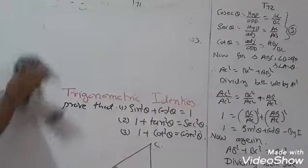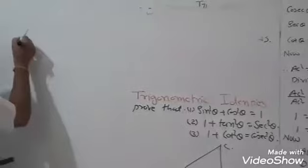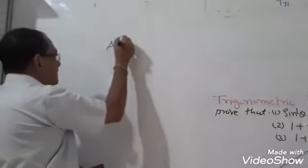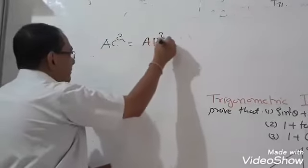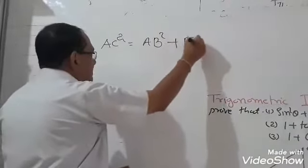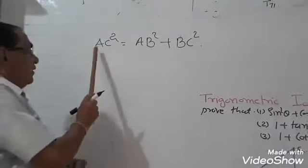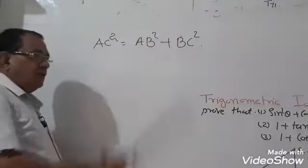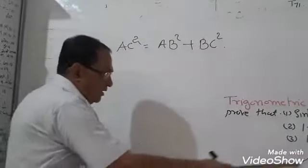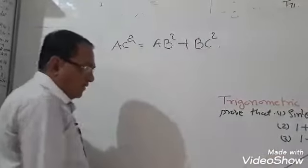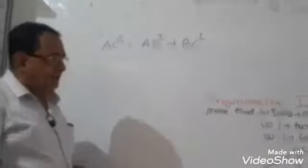According to the Pythagoras theorem, the square of the hypotenuse equals the sum of the squares of the other two sides: AC² is equal to AB² plus BC².